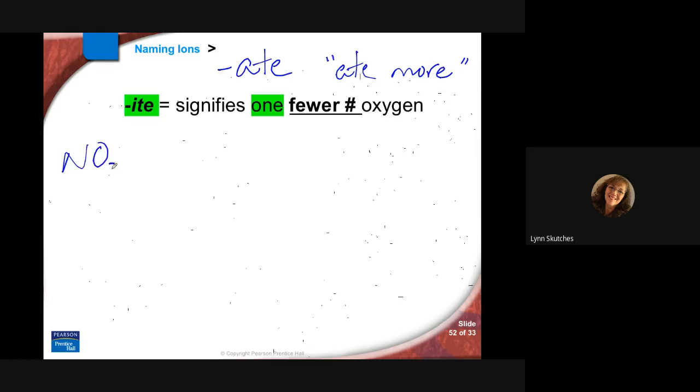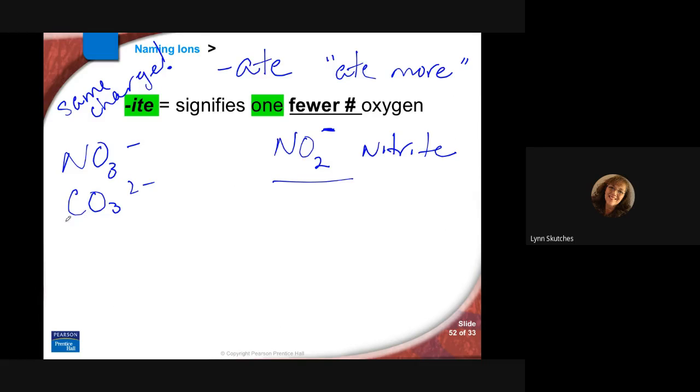Again, -ite indicates one fewer oxygen, less oxygen, because -ate means it has more. So nitrate, one less oxygen means NO2. It still keeps the same charge. The charge doesn't change, just one less oxygen. This is nitrite. Carbonate does not have a carbonite in real life, it's not real. Chlorate can form chlorite, which is two oxygens.